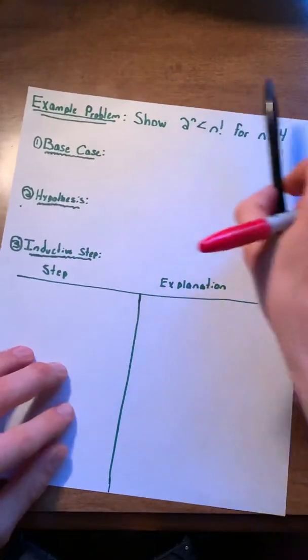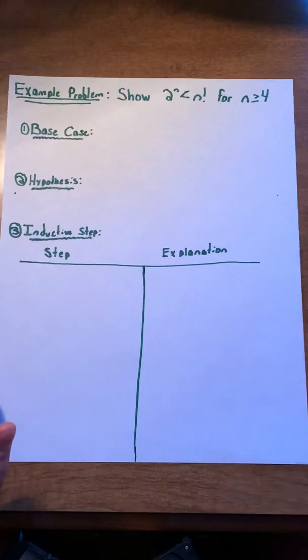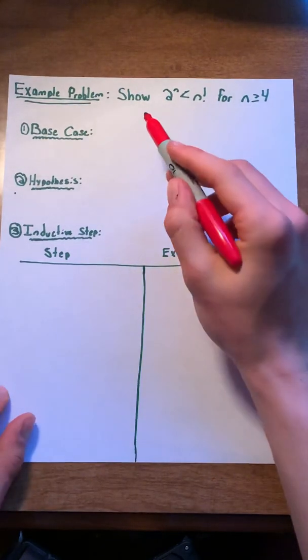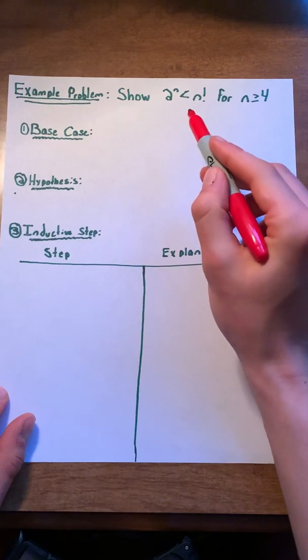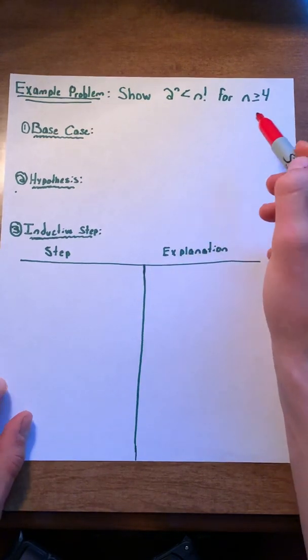Now, let's work our way into an actual example problem to show that this works. We're trying to prove that two to the n is less than n factorial for n greater than or equal to four.